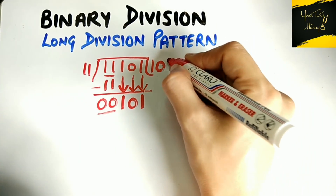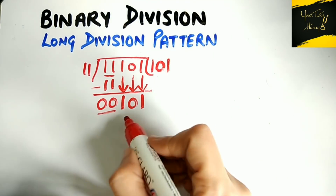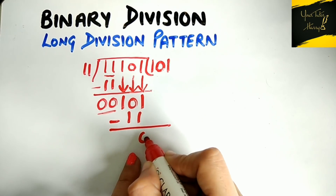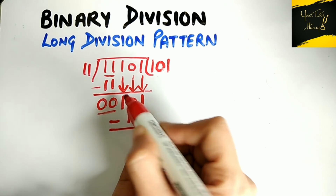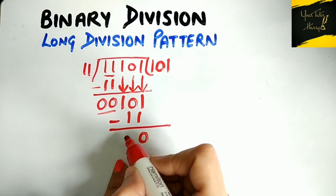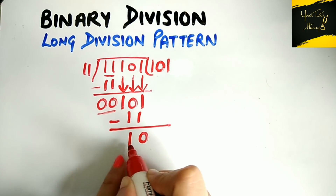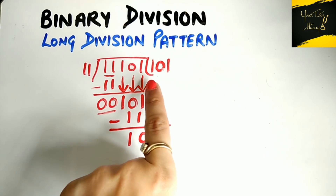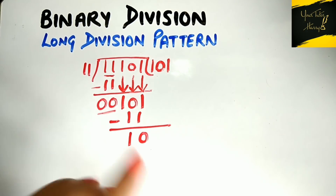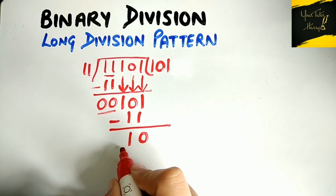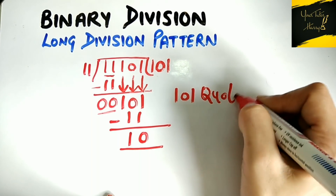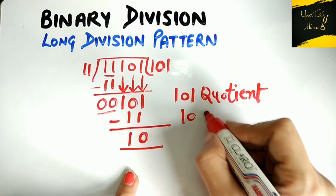Whenever the working number is larger than the divisor, we place 1 in the quotient. So '11' comes here. After subtraction: we compute '101' minus '11'. For the borrow case, we take 1 borrow, and the result gives us remainder '10'. No more digits are left in the dividend, and '10' is smaller than the divisor '11', so we stop. The final result is quotient '101' and remainder '10'.